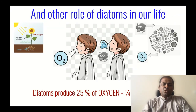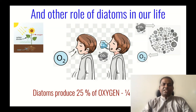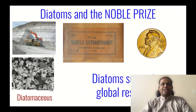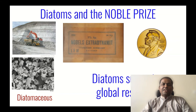Apart from this, diatoms provide one invaluable ecosystem service: they produce oxygen. Diatoms produce almost one fourth — 24% — of global oxygen, which means every fourth breath we take comes exclusively from diatoms. We should be thankful to diatoms every day. Diatoms also have a big connection with the Nobel Prize — Alfred Nobel made dynamite using diatoms, and this generated a lot of money for the Nobel Foundation which supports the Nobel Prize every year.